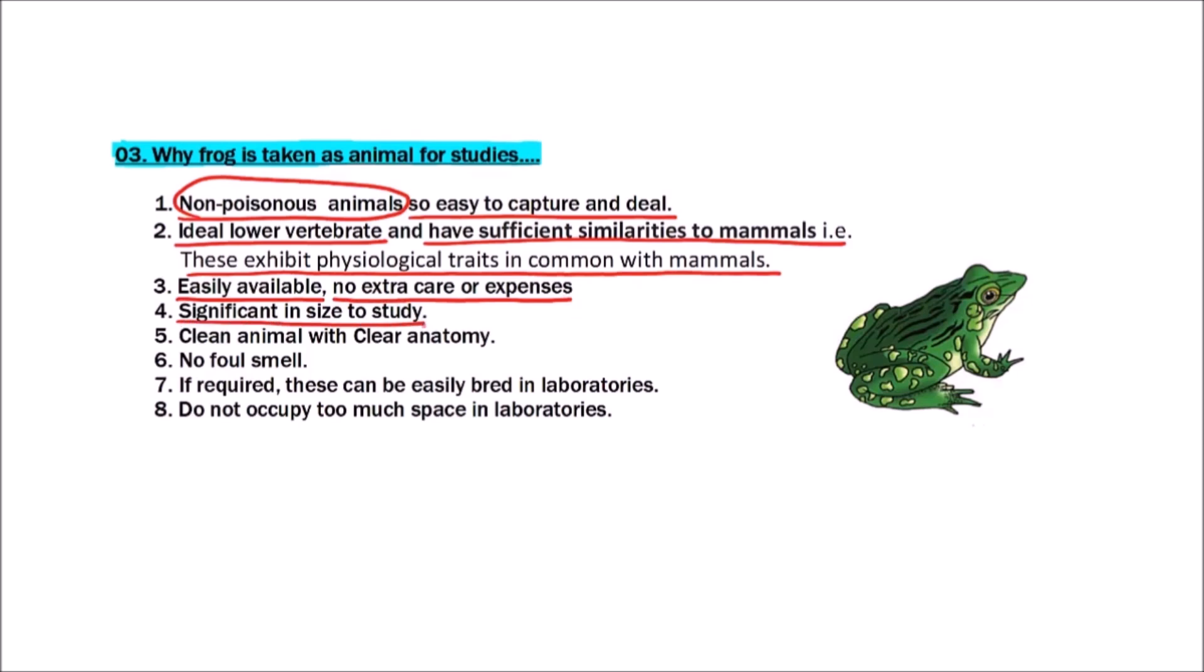In comparison to other animals, it has a significant size. It can grow up to 18 centimeters in length. It is a clean animal with clear anatomy. That is, the organism can be easily understood and the systems or organs in the body after dissection can be easily observed.